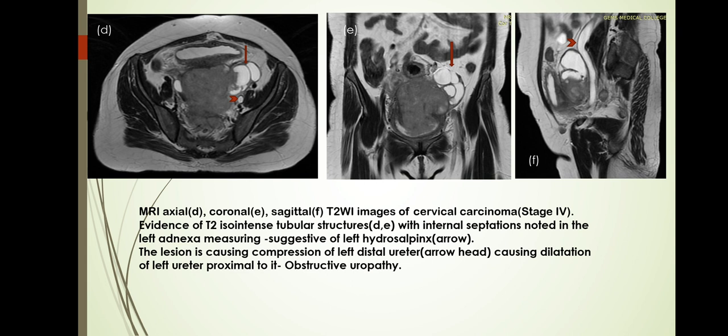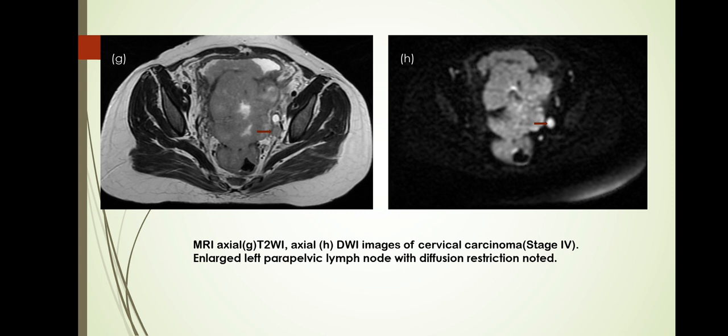The lesion is causing compression of the left distal ureter (shown with arrowhead), causing dilatation of the left ureter proximal to it, causing obstructive uropathy. Post-contrast T2-weighted and diffusion-weighted images in the same case show an enlarged left para-pelvic lymph node with diffusion restriction on DWI.